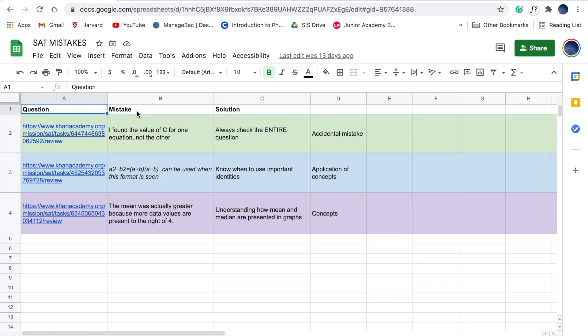This is part of my Excel sheet from when I was studying for the SAT. The green color code is for accidental or careless mistakes. In the first column, I linked the questions from Khan Academy, which is where I was doing most of my studying. In the second column, I write down specifically what the mistake was.